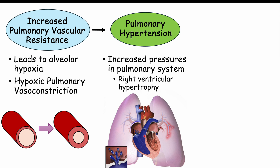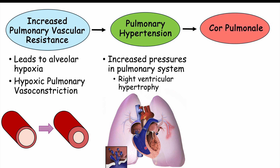The right ventricle becomes a big, thick, muscular chamber — bigger than it should be. However, the heart cannot maintain that effort indefinitely, and over time that enlarged, muscular right ventricle can become weakened itself, leading to what we call cor pulmonale.